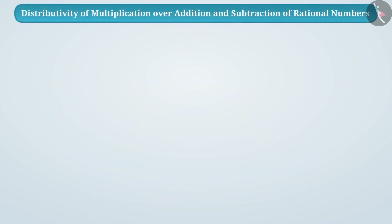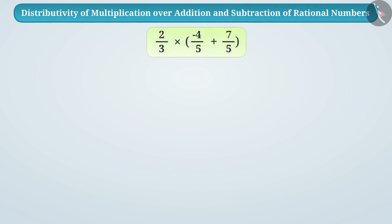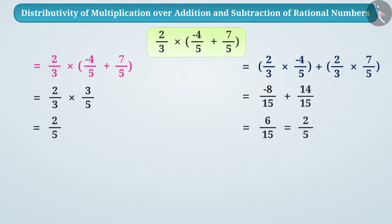Multiplication can also be distributed over addition in rational numbers. For example, suppose we want to multiply 2/3 by (−4/5 + 7/5). We can do it in one way or another way, and we get the same result in both cases.